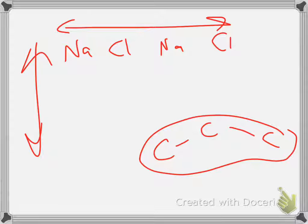A chunk of sugar you can melt with a candle flame, melt it with a lighter, melt it on the stovetop. You can't do that with salt. You can't do that with something that's an ionic compound.